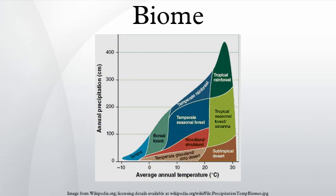Climate is a major factor determining the distribution of terrestrial biomes. Among the important climatic factors are latitude — arctic, boreal, temperate, subtropical, tropical — and humidity — humid, semi-humid, semi-arid, and arid — as well as seasonal variation. Rainfall may be distributed evenly throughout the year or be marked by seasonal variations.